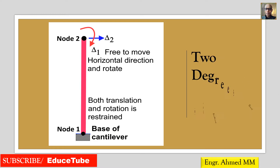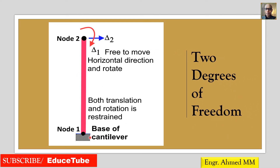Here, in this structure, if we look at the base, this is actually a cantilever. Here it is a fixed support at the base of the cantilever. So both translation and rotation are restrained. So in node 1, translation and rotation are restrained.